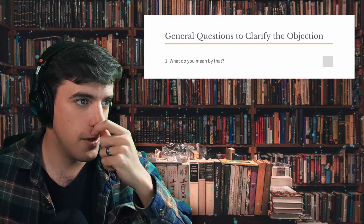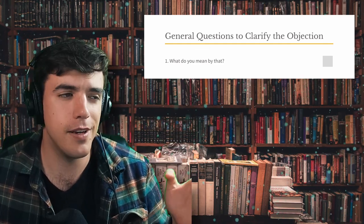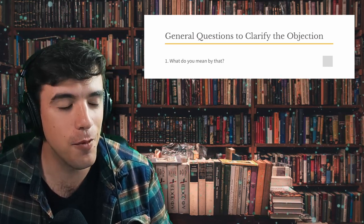So anyway, all that to say, here's this checklist. I want to share it with you. General questions to clarify the objection. First one, what do you mean by that? I've looked at this already. I kind of knew that. But what do you mean by that? That is question number one.